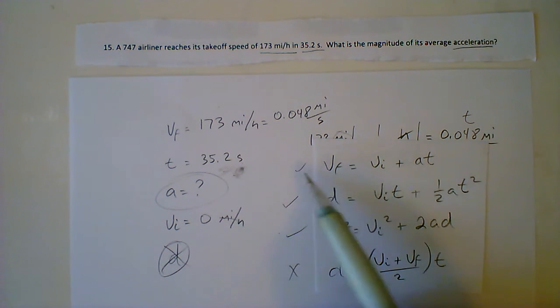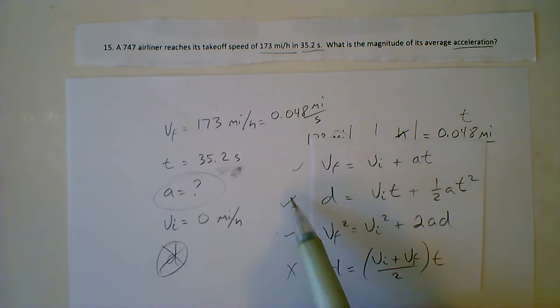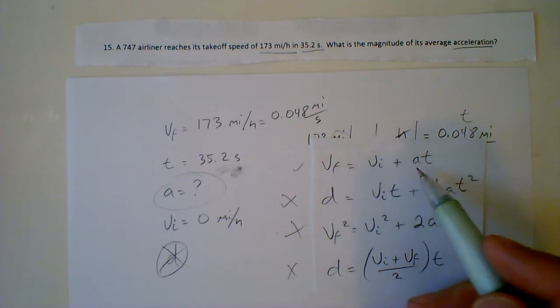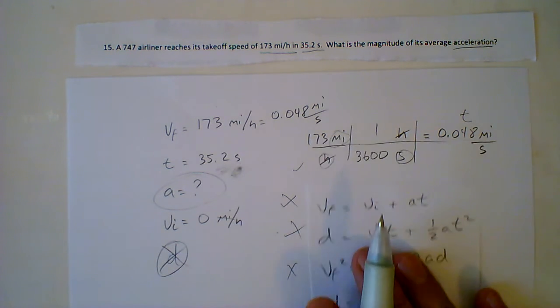So this is a process of elimination. The first one doesn't have a D, so I can still use it. The second one has a D, can't use it. The third one has a D, can't use it. If I had five variables in my givens list, I might be able to use more than one of these and come up with the right answer. So I decide I'm going to use the VF equals VI plus AT.